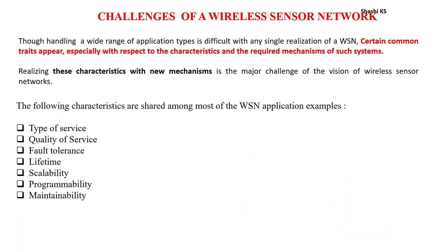The main characteristics which are common among most wireless sensor network applications are: type of service, quality of service, fault tolerance, lifetime, scalability, programmability, and maintainability. Let's learn about each of these characteristics of wireless sensor networks.